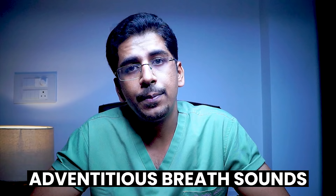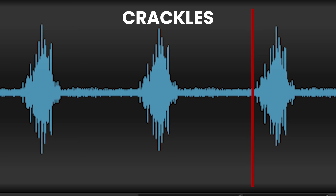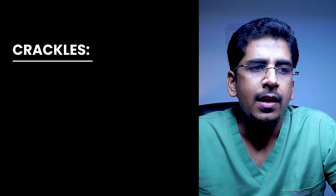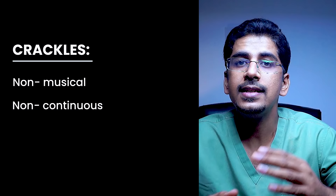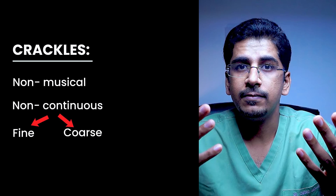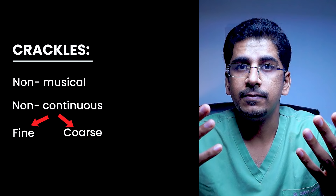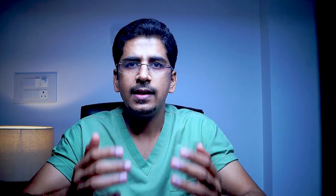Coming on to the adventitious or abnormal breath sounds — the first is crackles. This is how it is heard. As you have heard, crackles are like a cellophane paper or tissue paper being crumpled — a bubbling sound. This is a non-musical and non-continuous sound, and it is mainly categorized as fine crackles or coarse crackles based on intensity, pitch, duration, positional change, and whether it is settled by coughing.